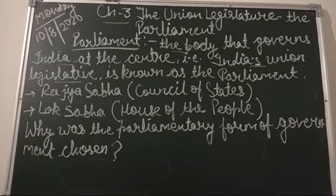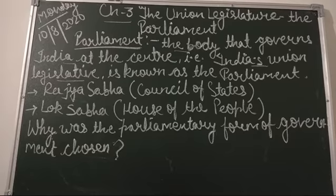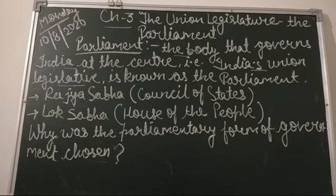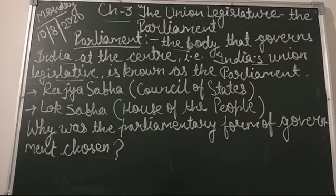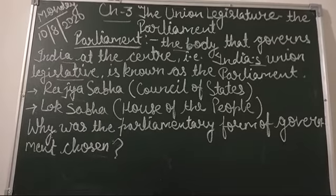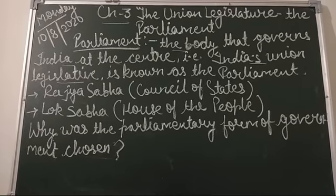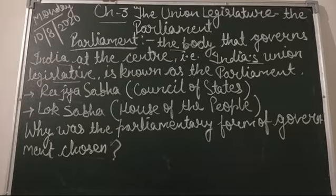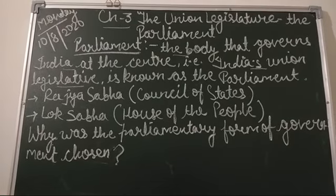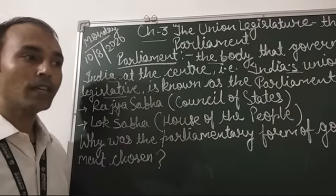If we had chosen the presidential form of government, it would give too much power to a single individual, which could become a kind of dictatorship. To avoid the misuse of power, we chose the parliamentary form of government, so that each organ can monitor and control the functioning of the other. Since the executive is answerable to the legislature and must resign if it loses majority support, the parliamentary form was chosen.